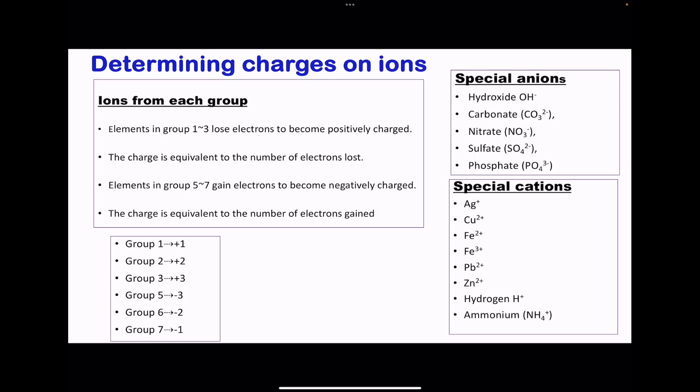The periodic table can help us determine the charges on the ions. Elements of group 1 to group 3 when they lose electrons become positively charged, and the charges correspond to the group in which they come from. For example, calcium is in group 2, it's going to be calcium 2+. The charge is equivalent to the number of electrons lost or gained.